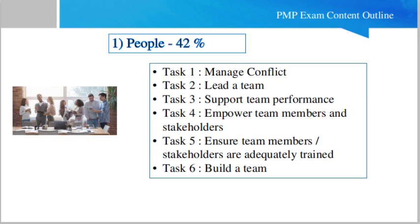The PMP Exam Content Outline is based on three domain areas: first, People; second, Process; and third, Business Environment. The People domain is basically about the soft skills of a project manager — how he will be able to manage people and stakeholders. This domain makes up 42 percent of the whole exam.